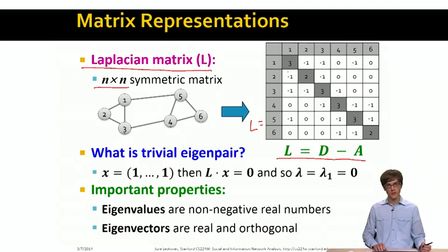What are some properties of this matrix? For example, one property that we notice is that the sum of entries in every row equals 0. Because the number of minus 1's that we have in every row is exactly the degree of the node, and on the diagonal we have the positive degree of that node, so the two things cancel out. So each row and each column of this matrix sums to 0.